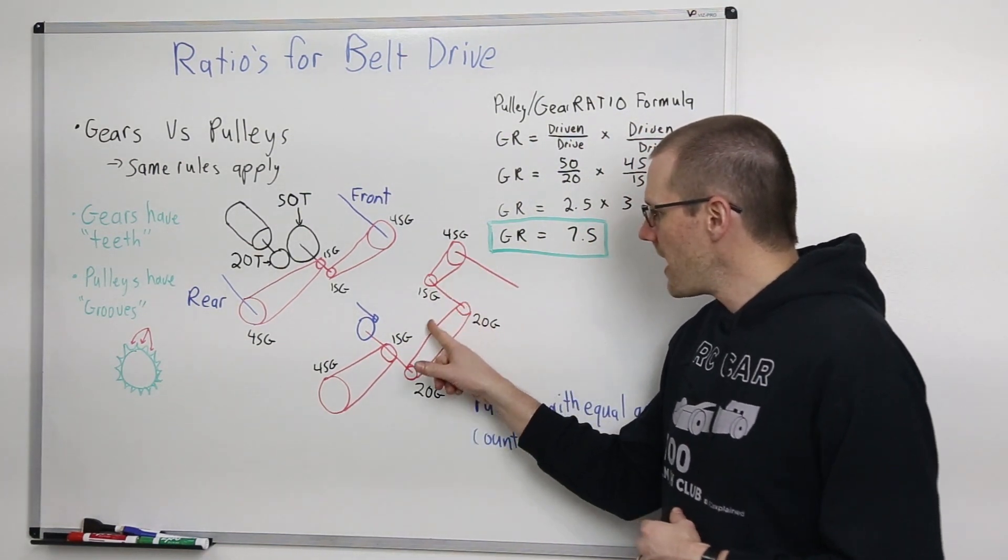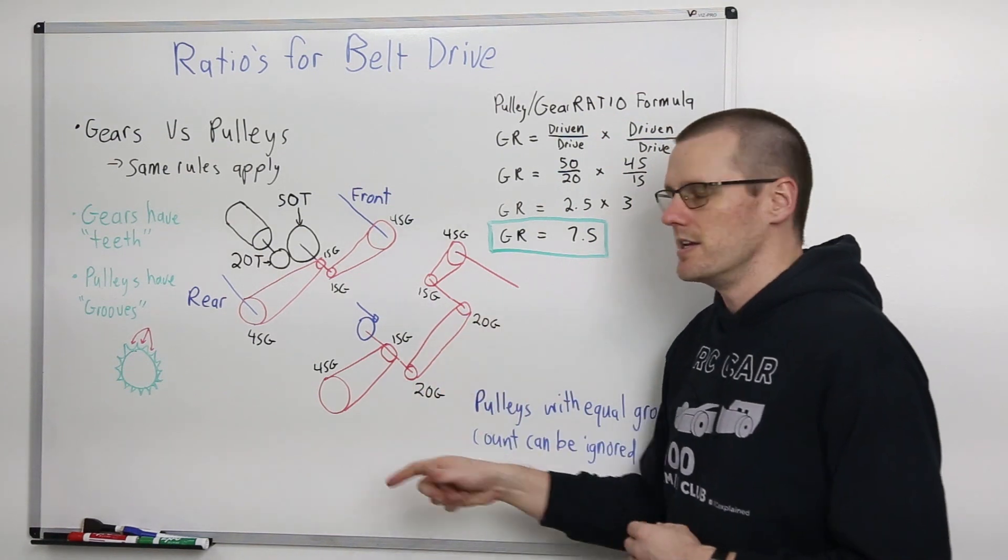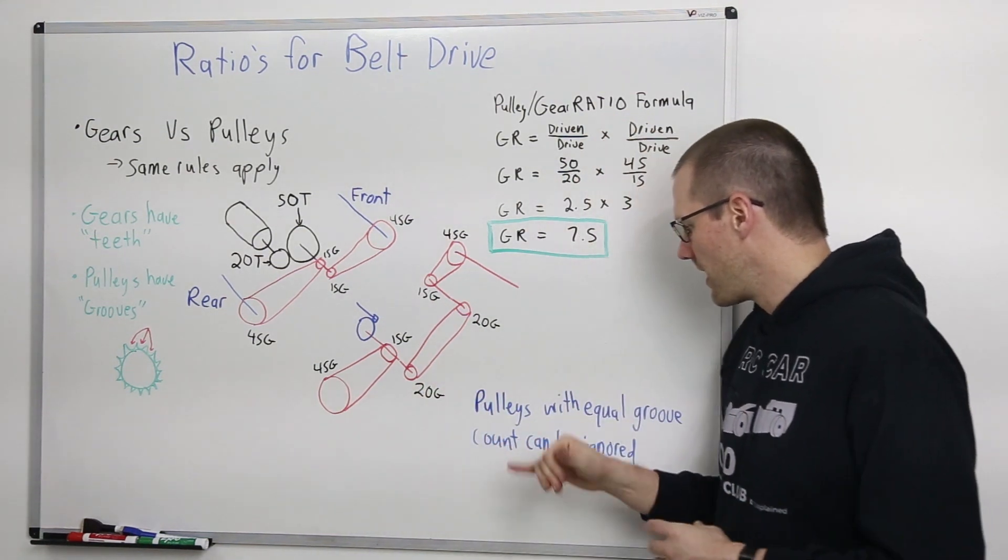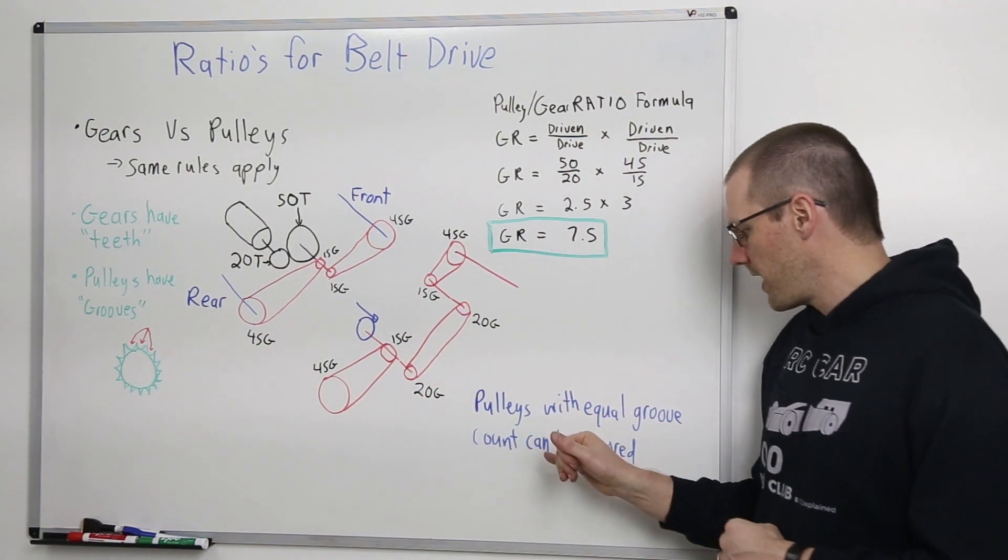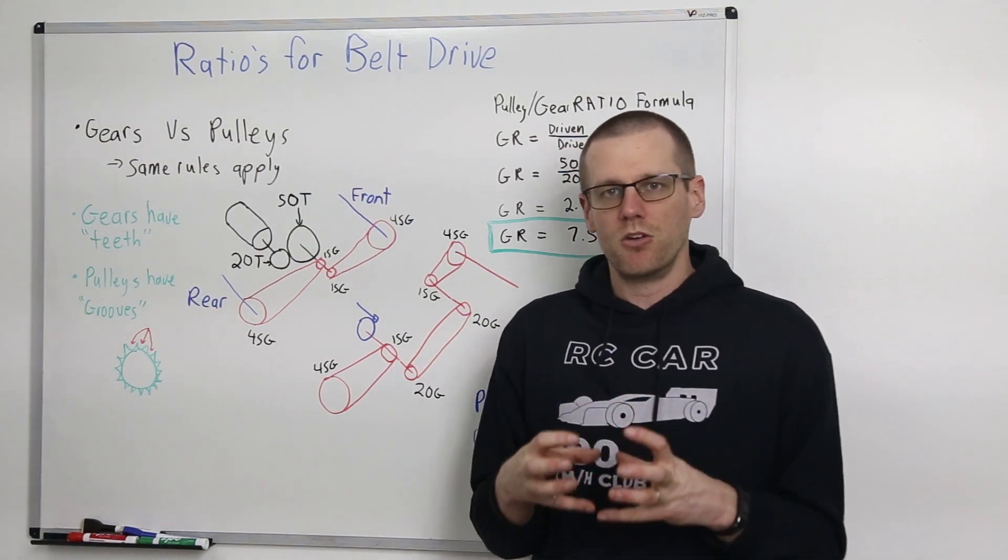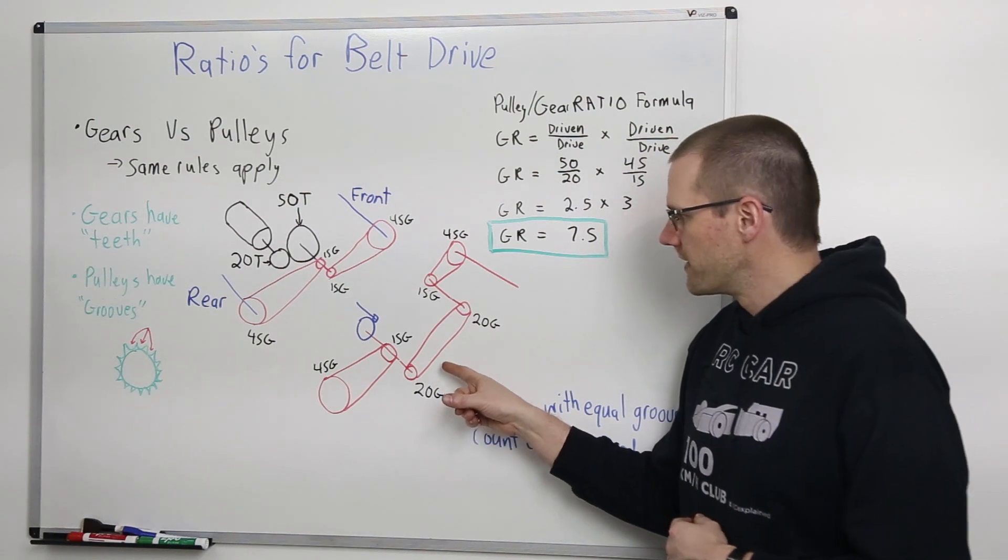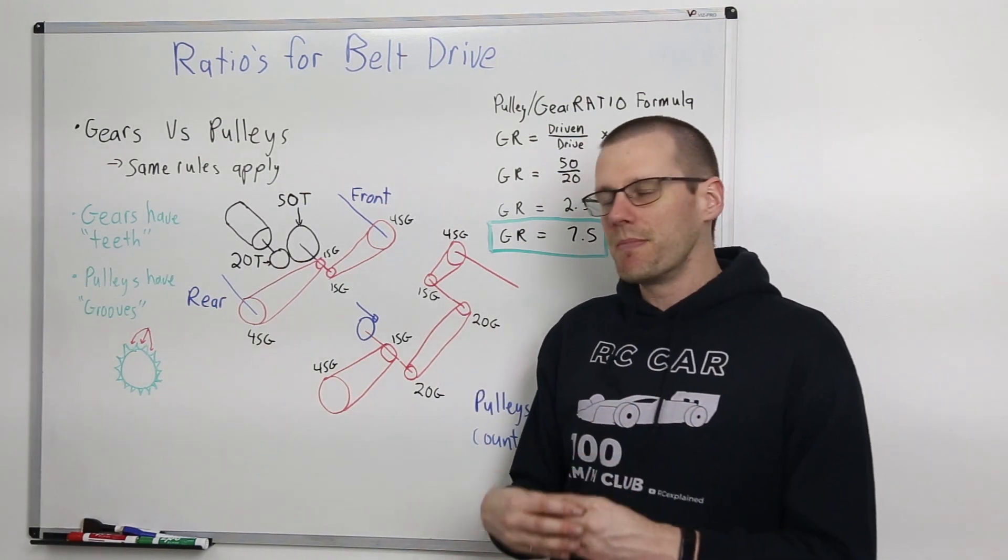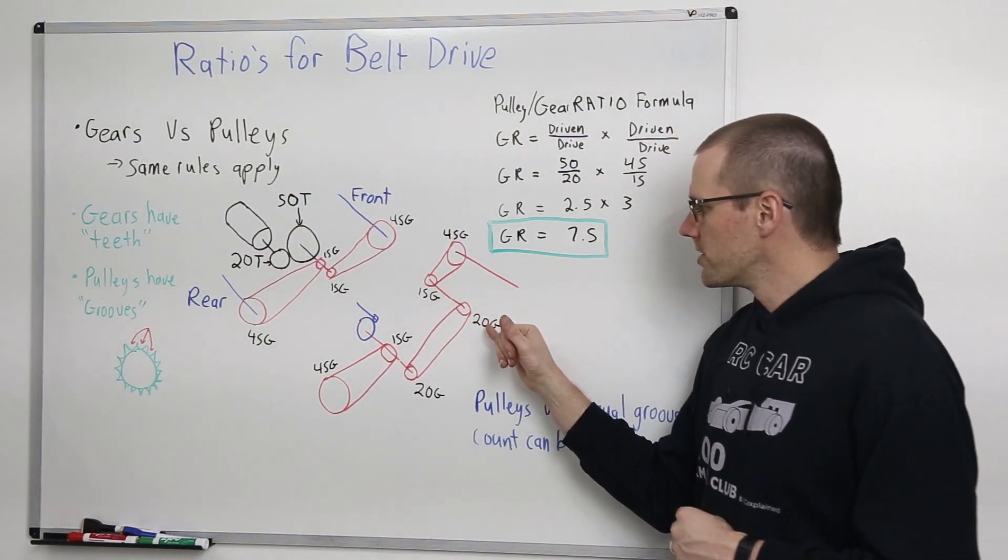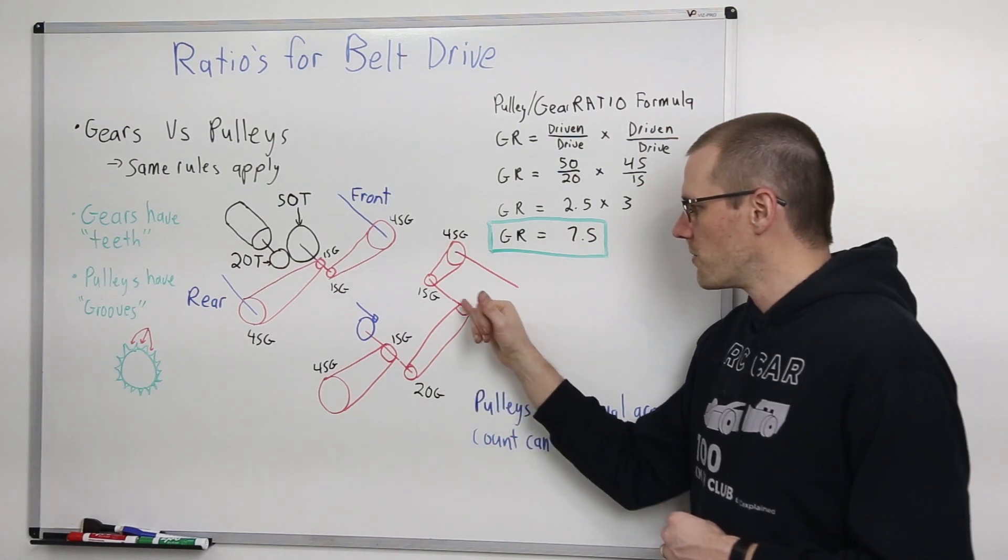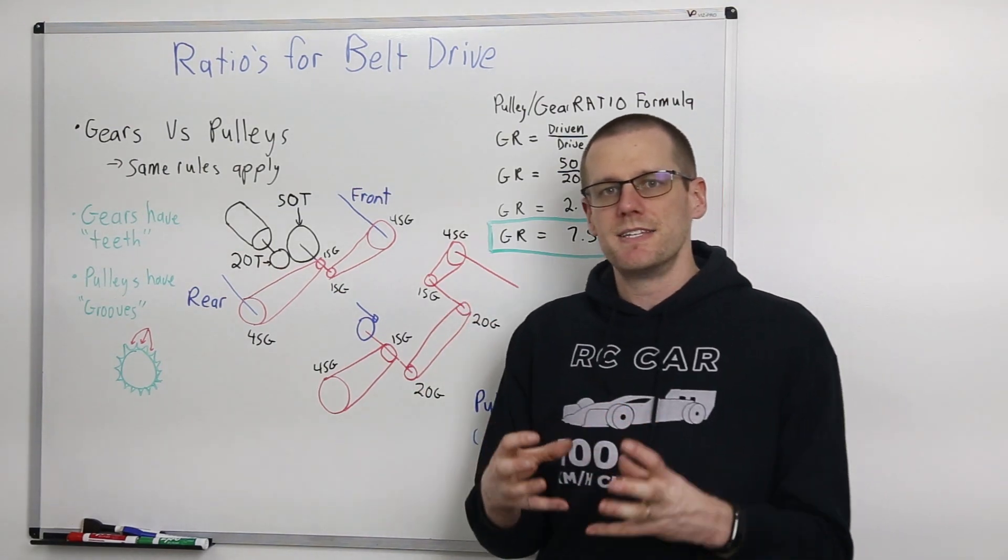Now, the big question is what's happening all in this centerpiece? Well, we have the point here that pulleys with equal groove counts can actually be ignored. So in other words, this 20 groove pulley here on the main shaft is equal to the same amount of grooves to the center shaft pulley here, 20 and 20, and both of them are linked by a single belt.